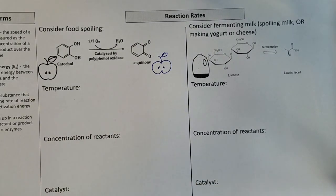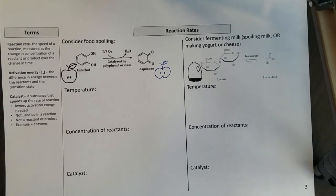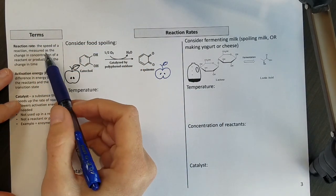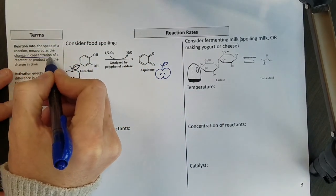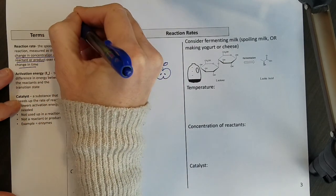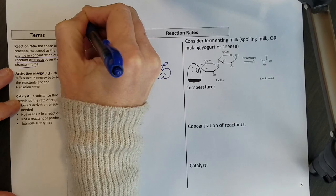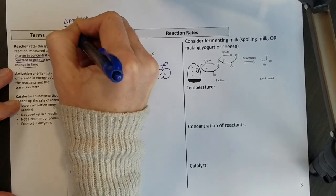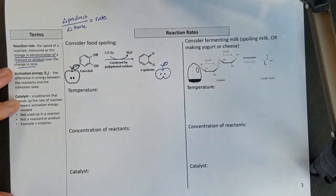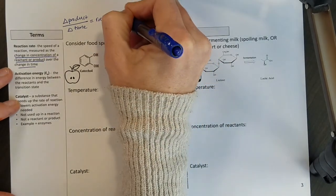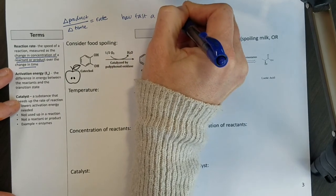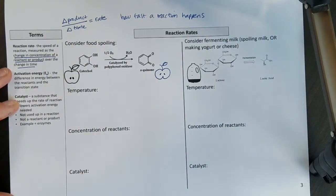We're looking at reaction rates here, and reaction rate is going to be the speed of a reaction measured as the change in concentration of a reactant or product over the change in time. So the change in product over the change in time, that's our rate. In other words, how fast a reaction happens, that's what reaction rates are.